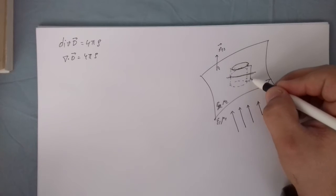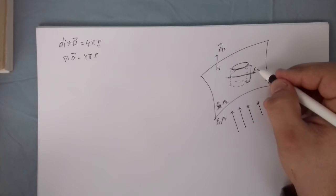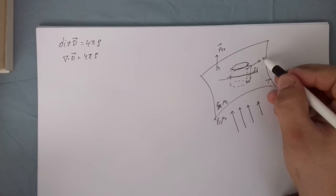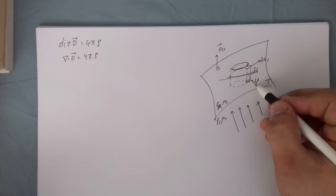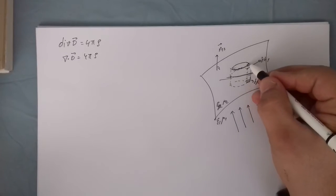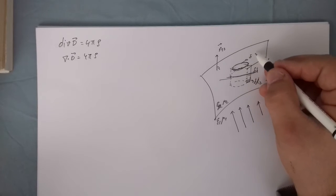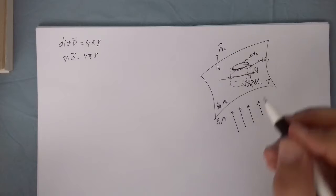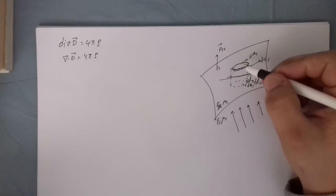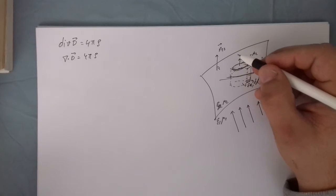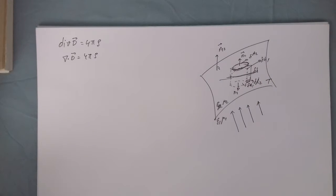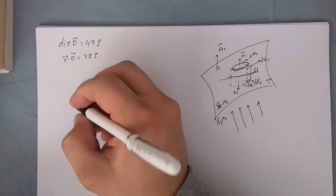The height of the cylinder is delta H, separated as delta H1 and delta H2. We also have areas: the area on top is delta A2 and below is delta A1. We have two unit normal vectors for those areas: N2 on top and N1 on the bottom.